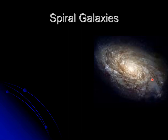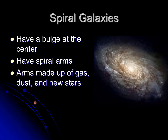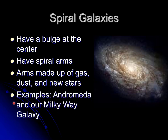You can see here a picture of a spiral galaxy. It has a bulge at the center, spiral arms, and those arms are made up of gas, dust, and new stars. Examples of spiral galaxies include the Andromeda galaxy and our own Milky Way galaxy, which is also a spiral-shaped galaxy.